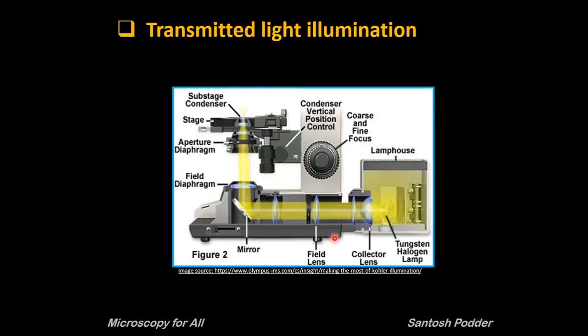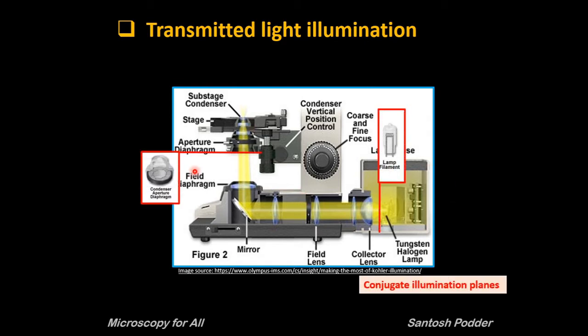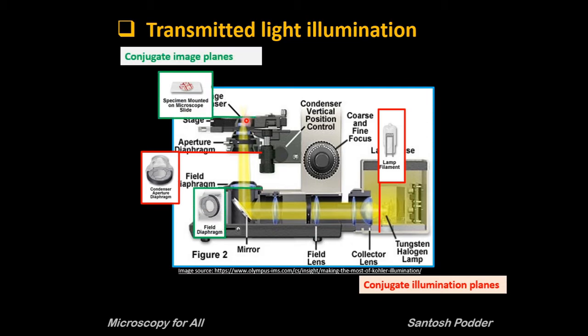What is the benefit of this arrangement? The light source is not focused directly on the specimen level, so light at the specimen level is essentially grainless and extended. These two planes are called conjugate illumination planes. The field diaphragm serves as a virtual source of light for the microscope, and its image is focused by the condenser onto the specimen level — so these two planes are called conjugate image planes.